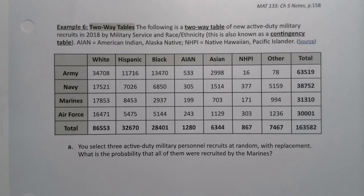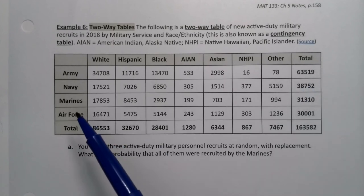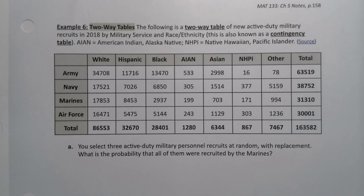For our next example of putting it all together, we want to look back at our friend the two-way table. Remember, these are also known as contingency tables. This particular one shows the new active duty military recruits in 2018 by military service and race ethnicity. And of course, yes, these are real data.